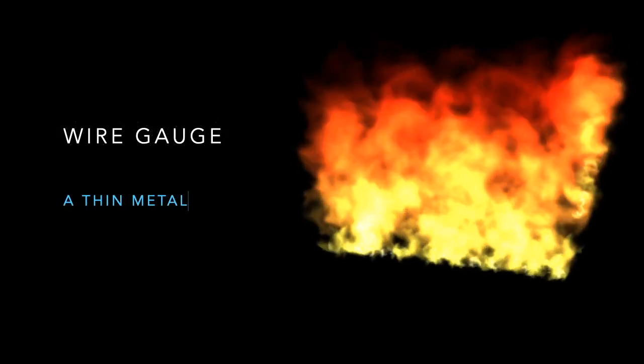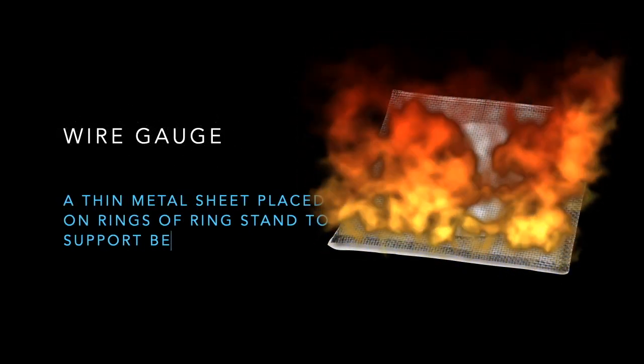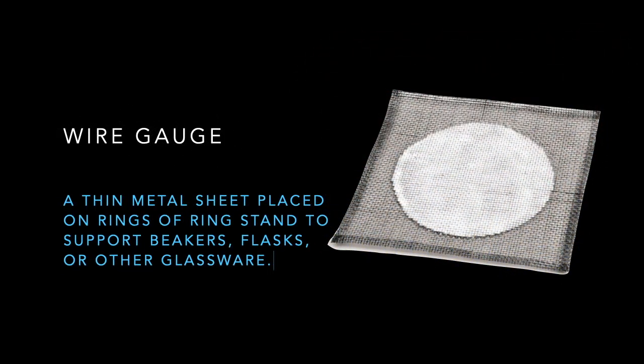Wire gauze: a thin metal sheet placed on rings of a ring stand to support beakers, flasks, or other glassware.